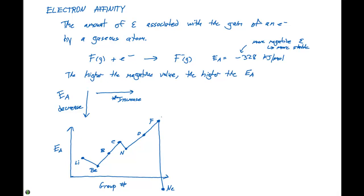For example, this would be negative 328 kilojoules per mole on the scale. But we represent that as the largest electron affinity.